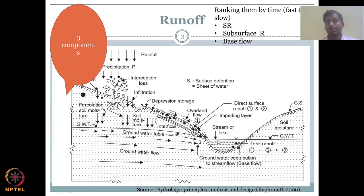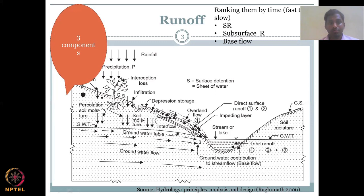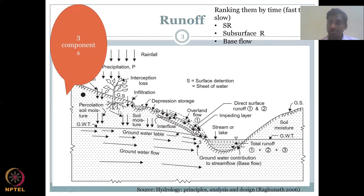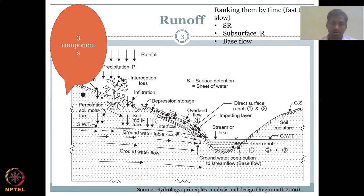Once all three components combine and flow into your stream, it is called discharge or runoff. What you see as water flow in a stream or river network is called runoff or discharge. Once runoff from the top of the surface comes and flows into a stream or lake, you can call it discharge. What is important to understand is the time — which process is faster than the others. Ranked fast to slow, the water from precipitation that hits the land surface and converts to runoff is the fastest, going through just one process: rainfall hits the surface and runs off directly.